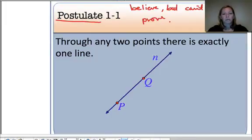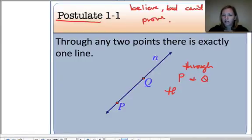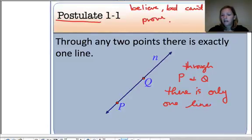So here's postulate 1-1. Through any two points, there is exactly one line. So in this case, we would say through the points P and Q, there is only one line. In this case, it's line N. So you might say line N is the only line through line P and line Q.